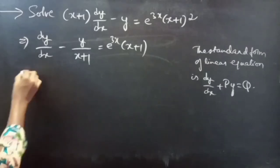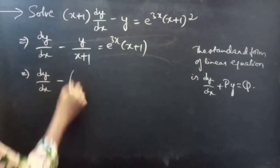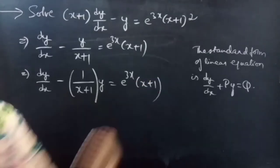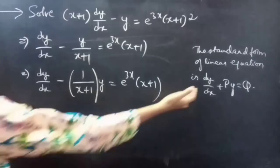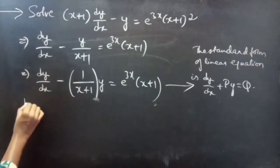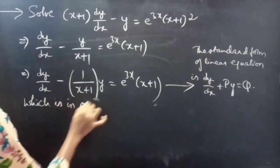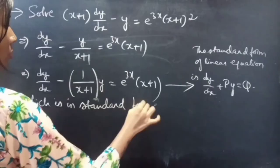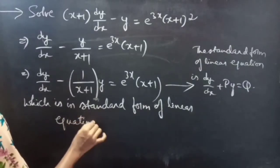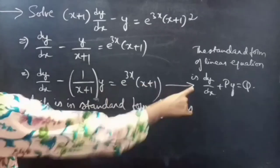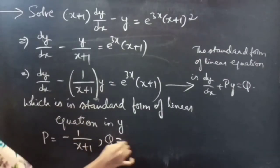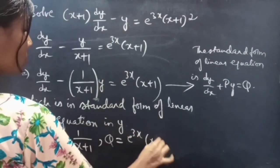Now write this as dy/dx minus [function of x] times y equals [function of x]. Compare this equation with the standard form of linear equation in y, which is dy/dx plus P·y equals Q. By comparing these two, we get P equals minus 1/(x + 1) and Q equals e^(3x) times (x + 1). Both are functions of x.